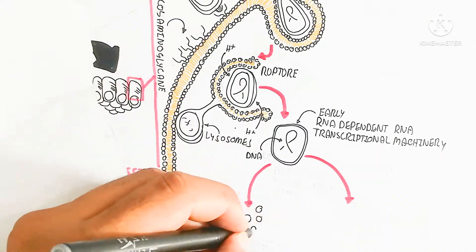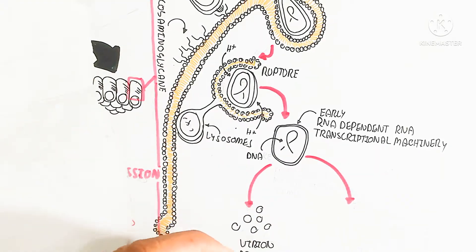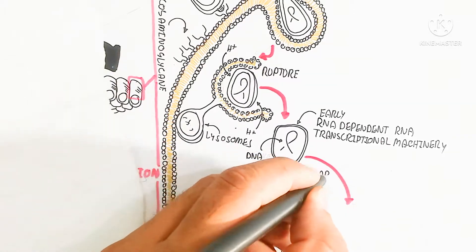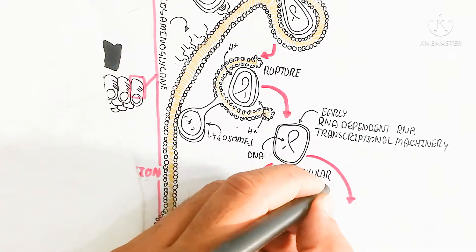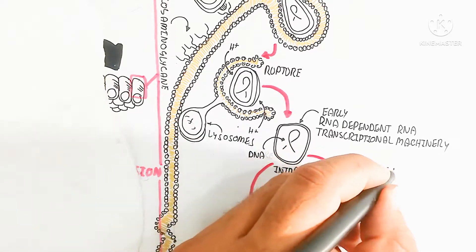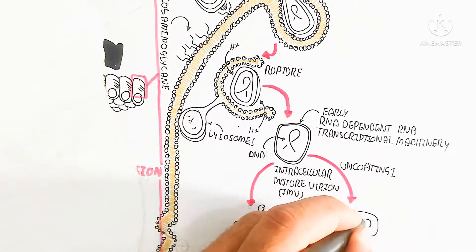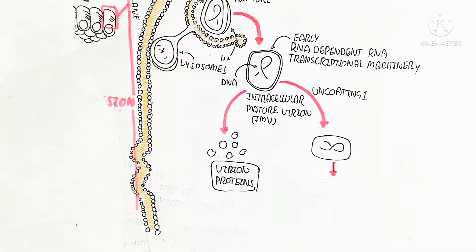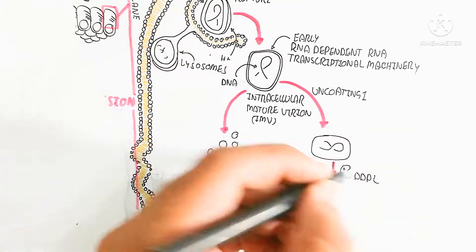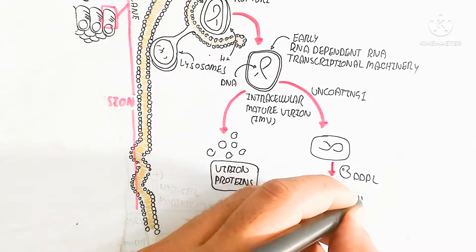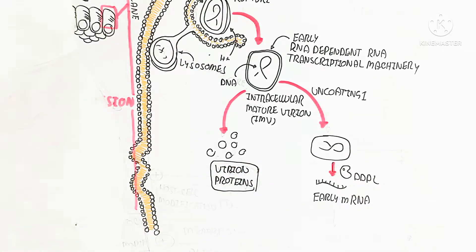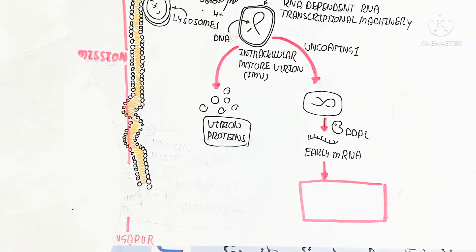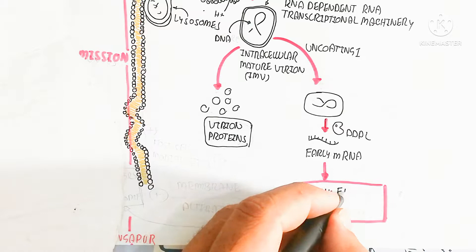This leads to uncoating number one, and the intracellular mature virion (IMV) is formed — the IMV being the DNA-containing virus. After this first uncoating, DNA-dependent polymerase enzymes are used for early messenger RNA production. This early mRNA leads to early enzyme and protein synthesis, which then enters the endoplasmic reticulum.